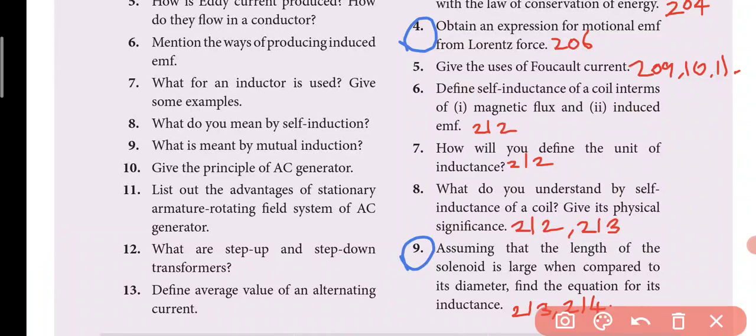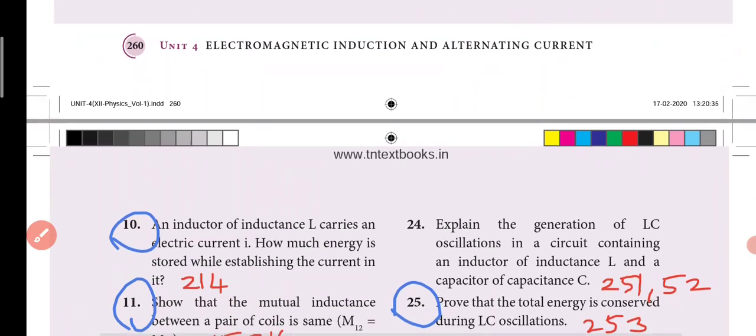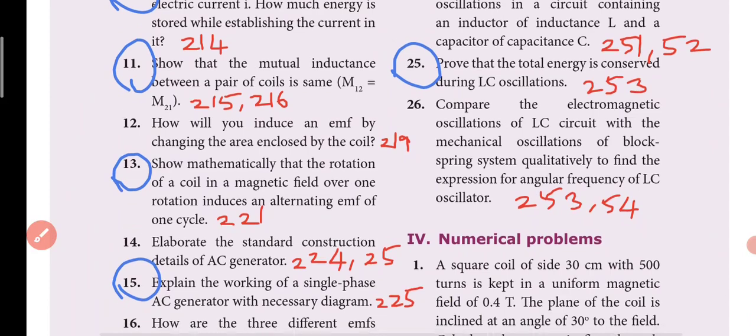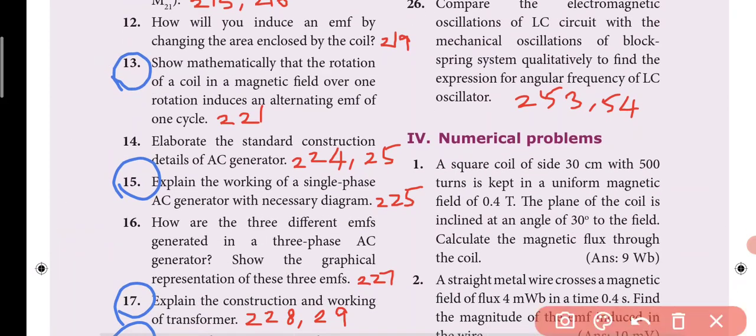Ninth question assuming the length of the solenoid compared to the radius, find inductance - 3 mark sometimes 5 mark. Tenth question principle of AC generator, 3 or 5 mark. Thirteenth question is very important, 5 mark question. Fifteenth question another 5 mark question. Seventeenth question construction and working of transformer another 5 mark question.